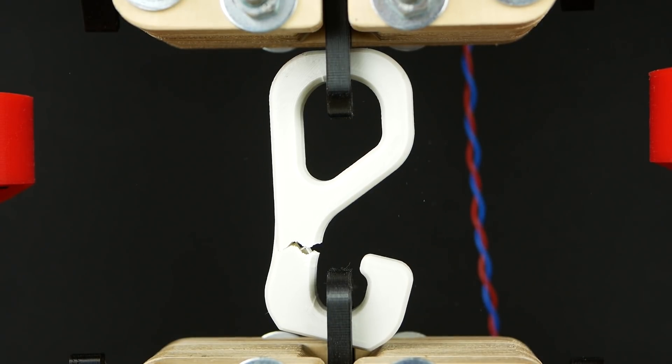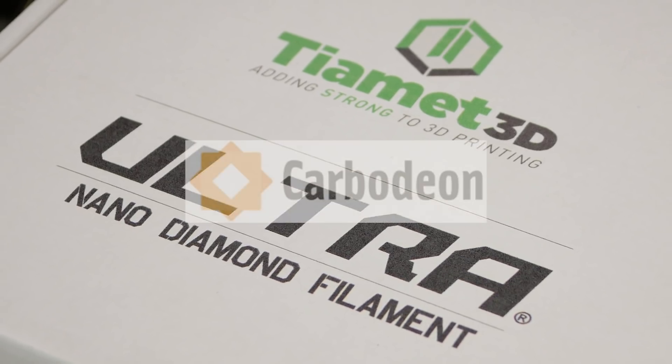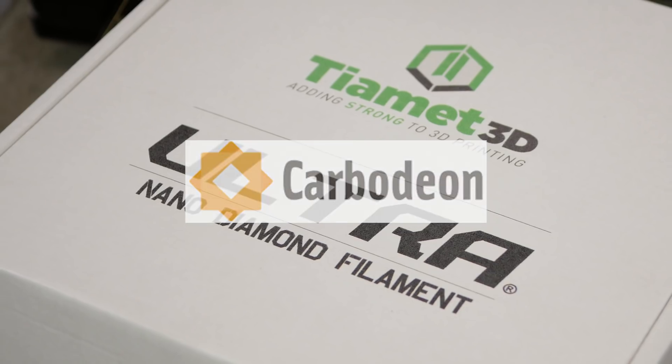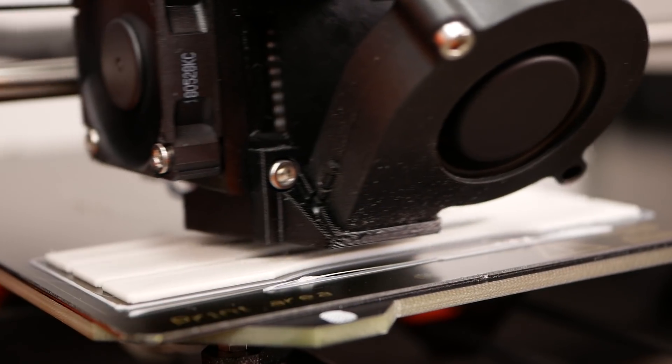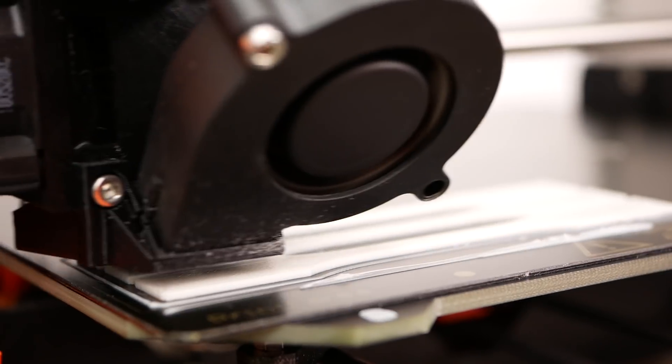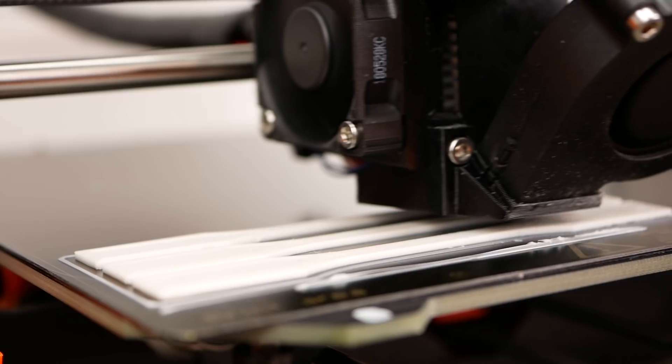This material is called Ultra Diamond PLA Plus and is sold by the Dutch company Tiremat3D and the Finnish company Carbodion that developed the technology to produce nanodiamonds. The filament is a composite material which uses PLA as the base polymer in which the diamond particles are added in a way similar to carbon fiber filled plastics.